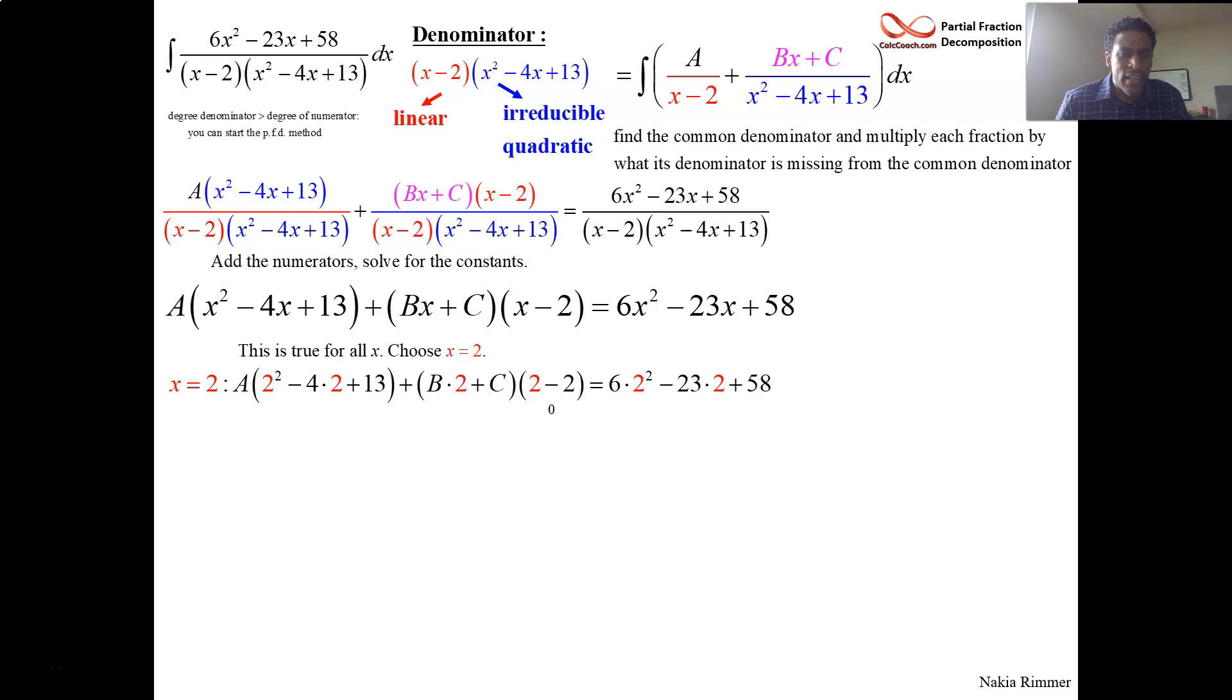So here we go. We plug x equals 2 in. We zero out the bx plus c term. We don't care about that term. Focus on the a term. Square the 2. That's a 4. 4 times the 2 is an 8, but it's a minus there, and then plus the 13. So, 4 minus 8 plus 13. The coefficient on a is a 9. On the other side of the equals, it got a little bit of a mess there, algebraically as well. So you'll end up with a 24, 6 times 4. If you double 23, you get 46, and then the 58. So putting those together, I think that's a 36. So if 9a is 36, then, of course, a is 4.